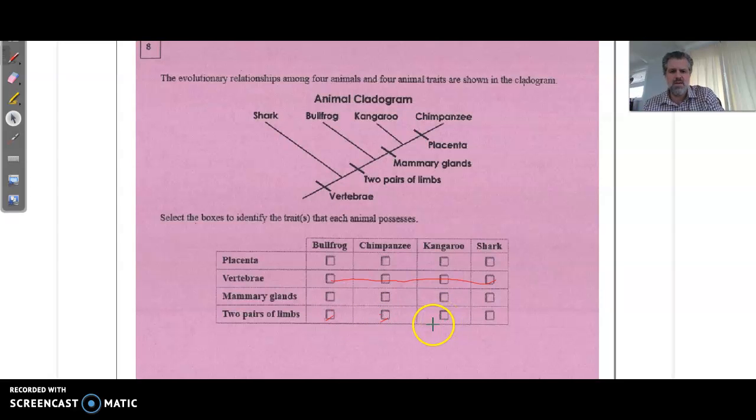Oh, that's really draggy and laggy. There we go. The mammary glands are only going to be in the kangaroo and the chimp, so the kangaroo and the chimp are going to have those. And then the placenta is only going to be in the chimpanzee. So there you go, that would be your answer to that one.